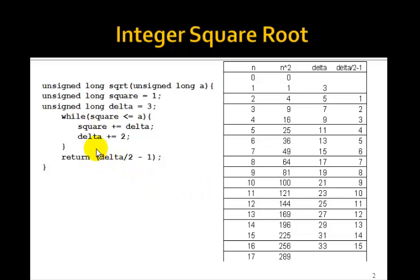You remember that algorithm. This is shown here for computing an integer square root. While square is less than or equal to a, square is square plus delta, delta is delta plus 2, and then you remember that we returned delta over 2 minus 1.